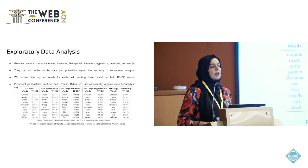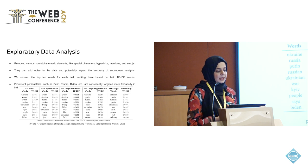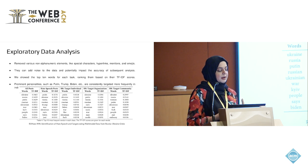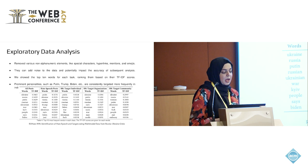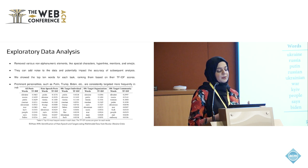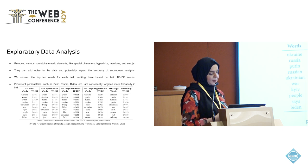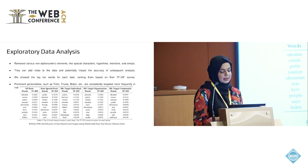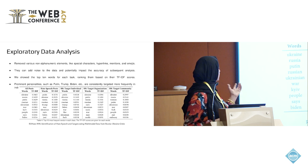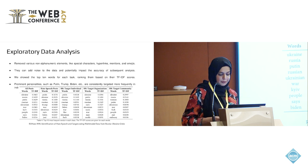We also conducted a thorough exploratory data analysis. We removed non-alphanumeric elements such as special characters, hyperlinks, mentions, and emojis, because they can add noise and potentially impact the accuracy of subsequent analysis. We showed the top 10 words for each task, ranking them based on their TF-IDF scores. We also found prominent personalities in the data, such as Putin, Trump, and Biden, who were consistently targeted and appeared more frequently in the data.